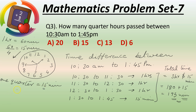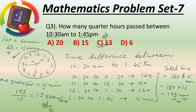We have 195 minutes total and 1 quarter equals 15 minutes. So we divide 195 by 15 to find how many quarters. The answer is 13 quarters. Option A is 20, Option B is 15, Option C is 13 — so Option C is our answer. We can verify: 10:30 to 11:30 is 1 hour, 11:30 to 12:30 is 2 hours, 12:30 to 1:30 is 3 hours, and 1:30 to 1:45 is 15 minutes — so 3 hours 15 minutes confirmed.